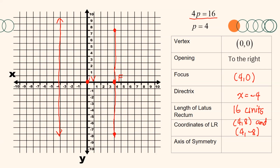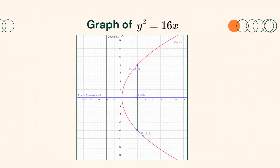Therefore, we can now draw our parabola. From the graph, notice that the axis of symmetry that divides the parabola into two equal parts is the line y equals 0, or the x-axis.